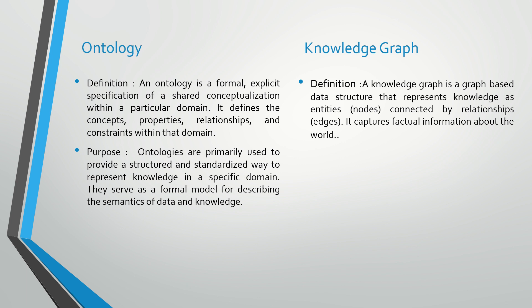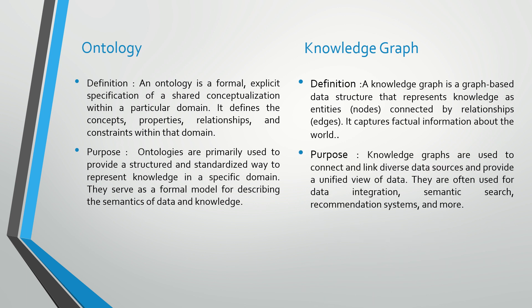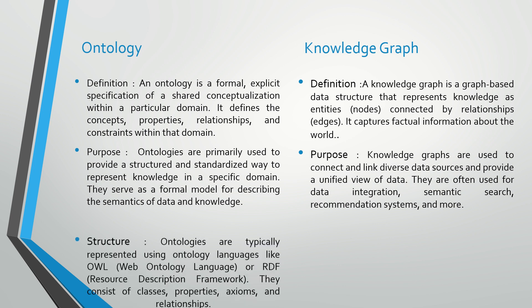Regarding purpose, ontologies are primarily used to provide a structured and standardized way to represent knowledge in a specific domain. They serve as a formal model for describing the semantics of data and knowledge. Knowledge graphs, on the other hand, are used to connect and link diverse data sources and provide a unified view of data. They are often used for data integration, semantic search, recommendation systems, and many more applications.